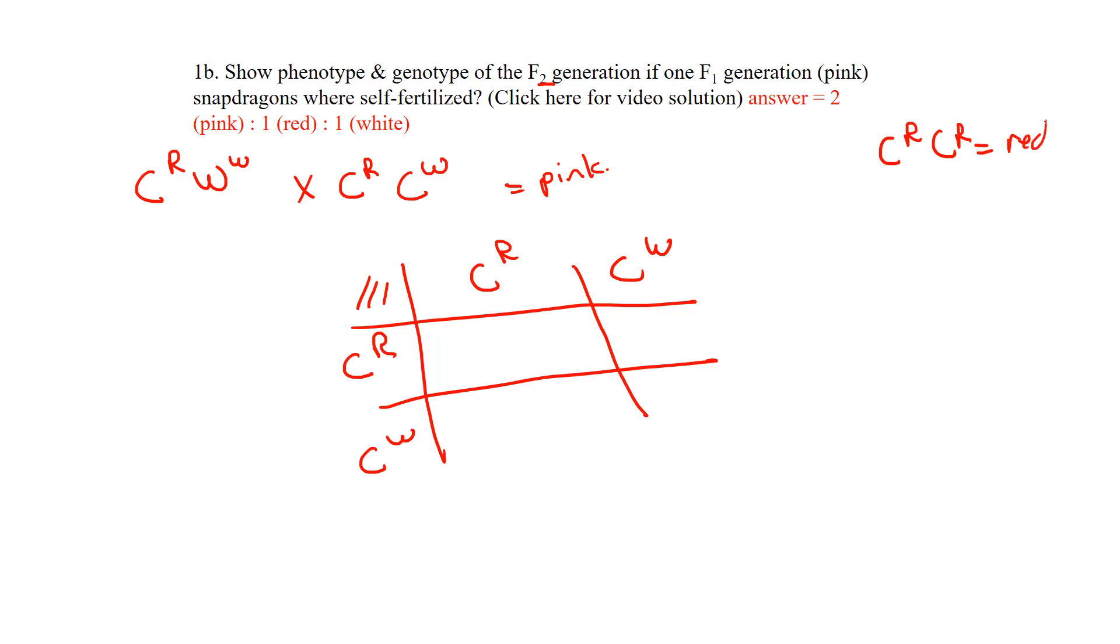If I have two R's, it's a red snapdragon flower. Two W's gives white. And if I have both R and W, it's pink.